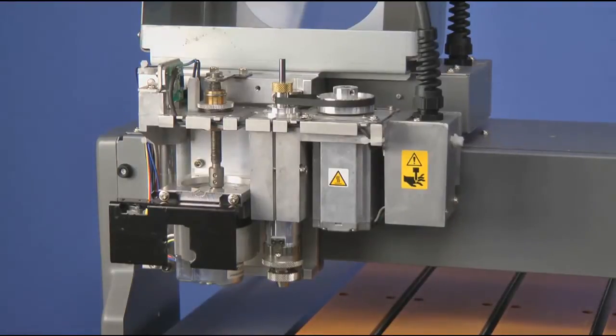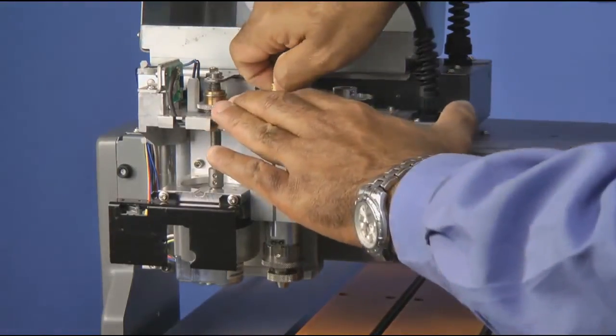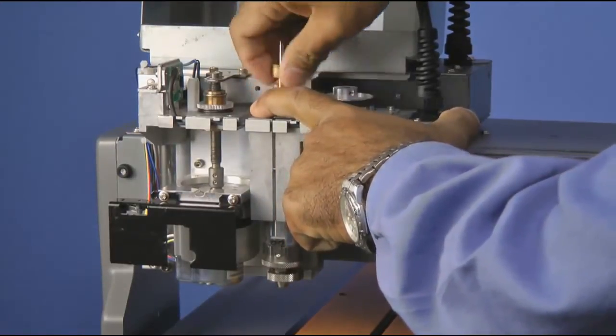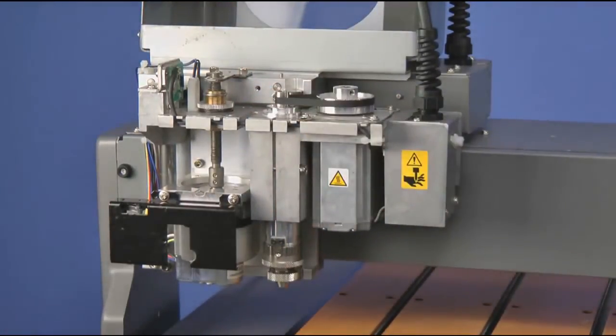Once it is flush, we will tighten down the hex screw on the brass cutter knob. Once this is done, we can remove the character cutter and set it aside.